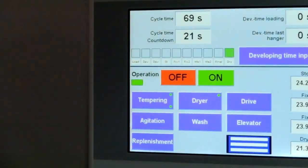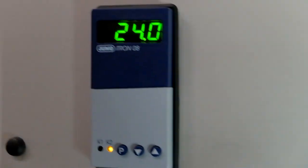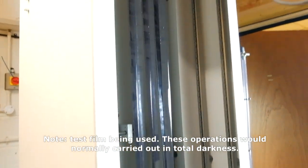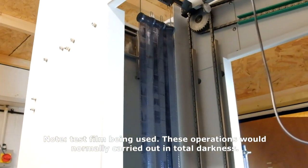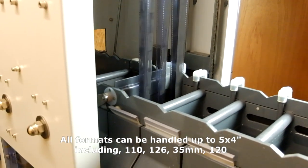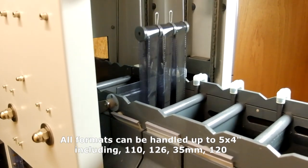How do we maintain the very highest negative quality? It really is the design of this processor. Particularly important for black and white. The dip and dunk system is essentially just as it sounds. The film is dipped into the chemistry and it touches nothing else.